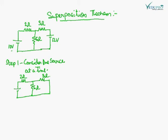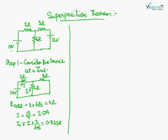If an ideal current source is replaced, it becomes an open circuit. A practical voltage source is replaced by its internal resistance. Similarly, a practical current source is replaced by its internal resistance with the shunt resistance. So we replace it by the internal resistance. The current I is equal to 10 upon 4, which equals 2.5 Ampere.